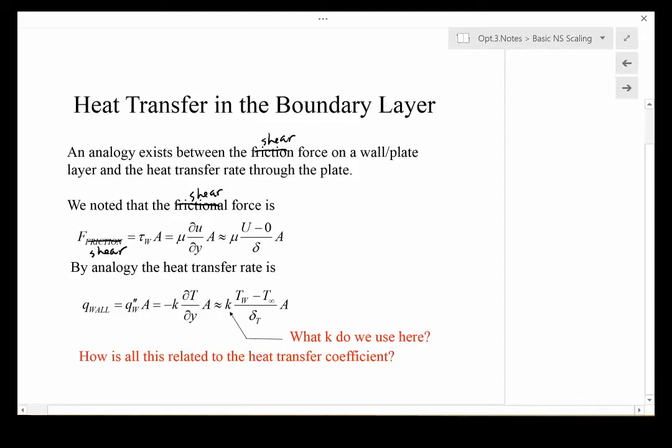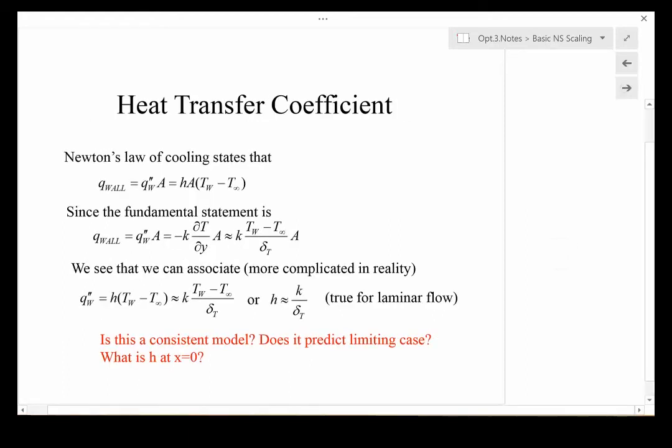The heat transfer rate through the wall is dependent on the heat flux times the area, which is defined in terms of the temperature gradient times the area. We see there is a relationship between these different parameters, and this guides us towards this idea of a heat transfer coefficient.